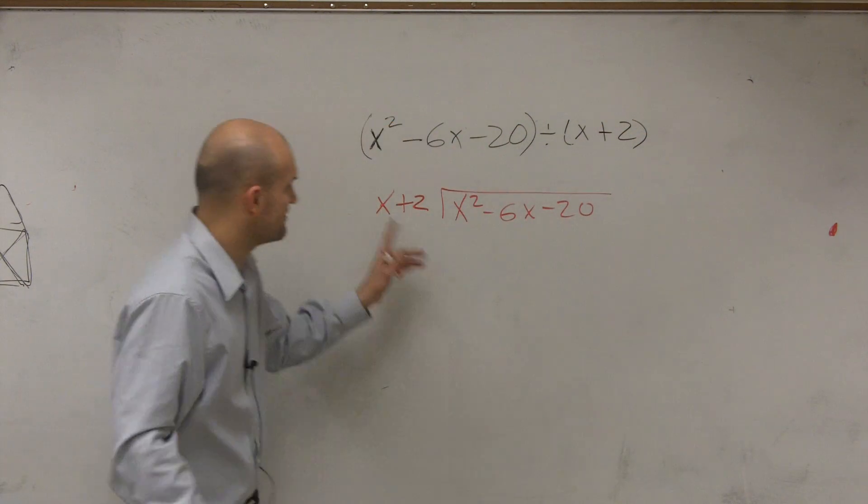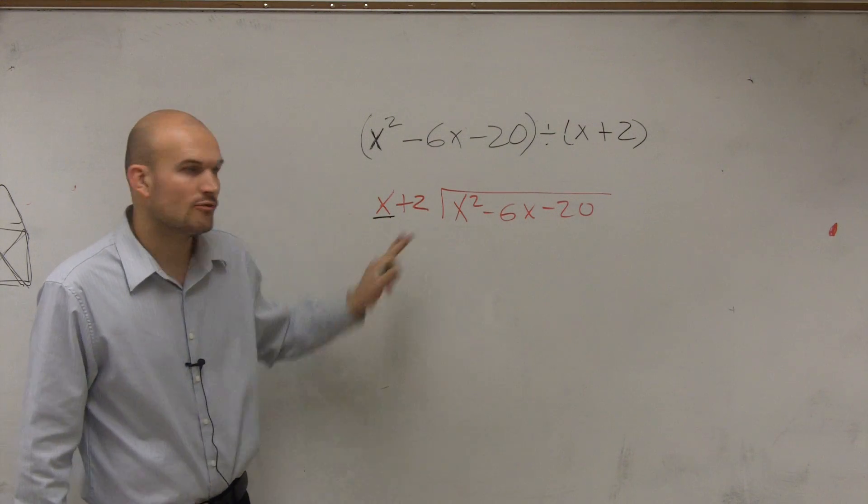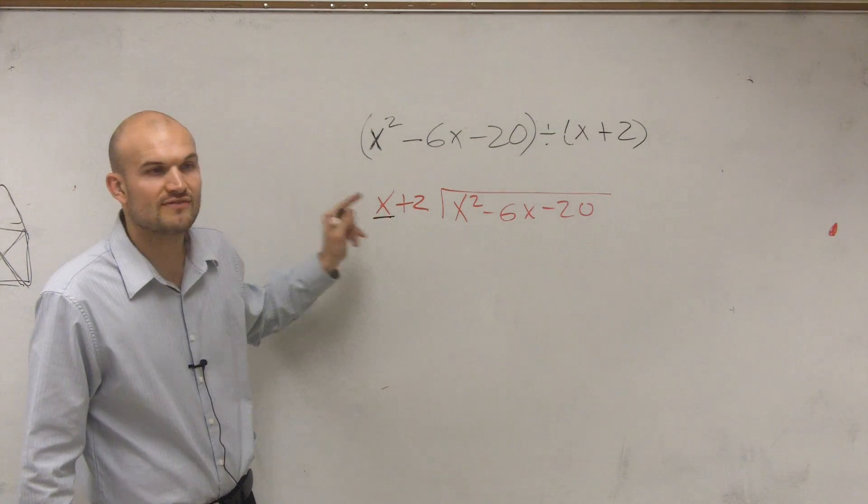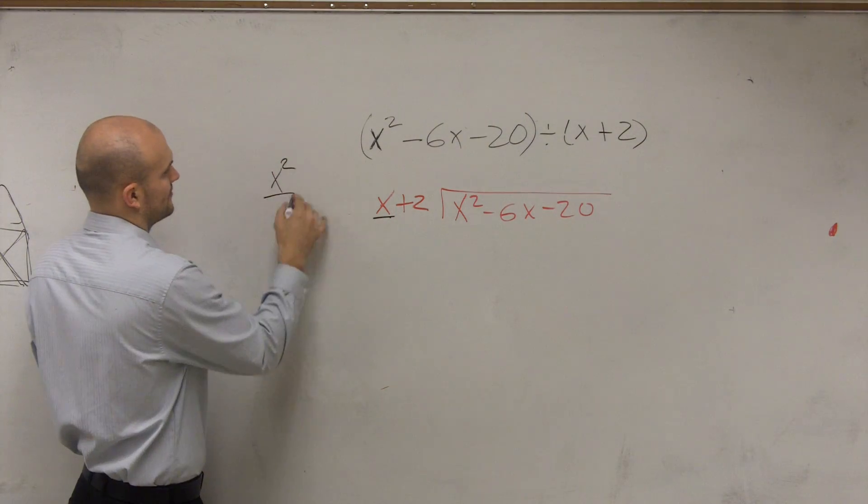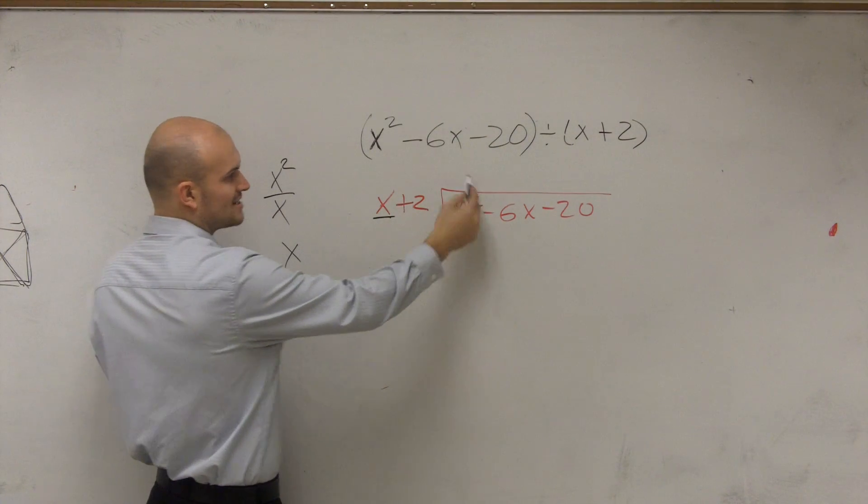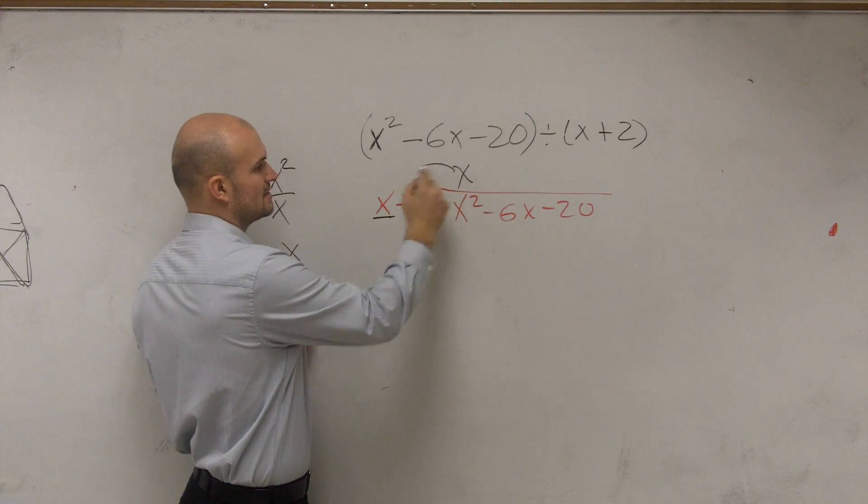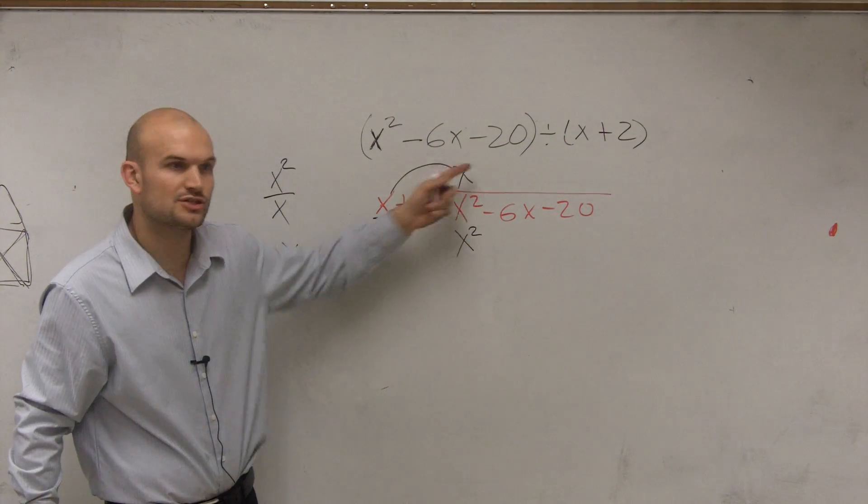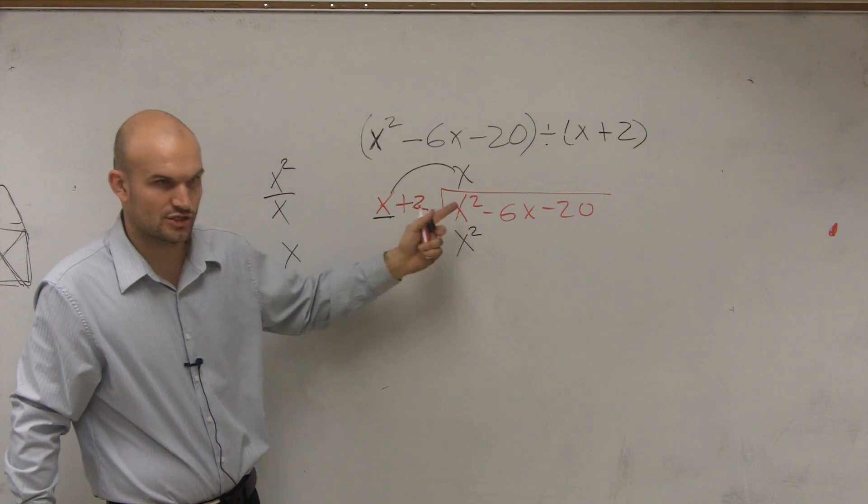We're going to divide only the first term. We're not going to worry about anything after the first term. We make sure our first term is our term with the largest degree, and then we only divide our first term. So x divides into x squared. x squared divided by x is x. The way to check your work is you multiply x times x, which is x squared. These have to be the same because you're checking your work. You're saying x divides into x squared x times, so therefore that means x times x equals x squared.